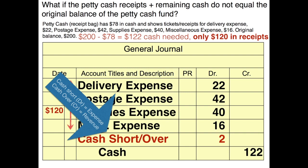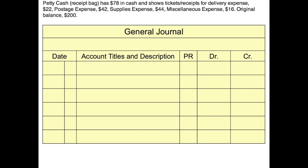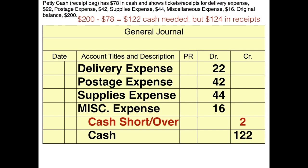Let's take one more example. We have our petty cash fund again: $78 in cash, supposed to be $200, so we credit cash for $122. But when we look at our expense receipts they actually add up to $124 — so in this case we're over. We need a credit to cash short and over to get that credit side up to $124. If these were two different transactions, our cash short and over balance would now have a zero balance, which is technically what we want.